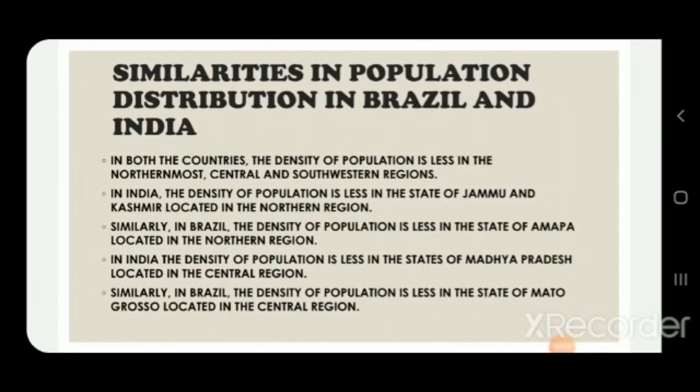The next topic is similarities in population distribution in Brazil and India. The density of population is less in the northernmost, central, and southwestern regions of both countries. For example, in India the density of population is less in the state of Jammu and Kashmir, located in the northern region. Similarly, in Brazil the density of population is less in the state of Amapá, located in the northern region.